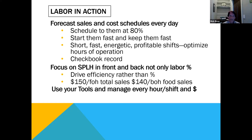For the front of house, target $150 in total sales per labor hour. Look at your numbers — you may be way below that or above it, but look at those metrics. For back of house, target $140 in food sales per labor hour. Use every tool you have to manage every hour of every shift and every dollar.